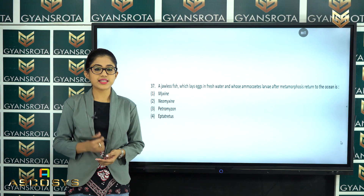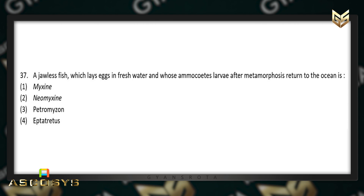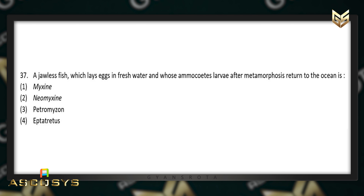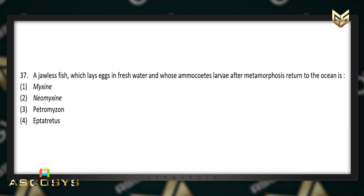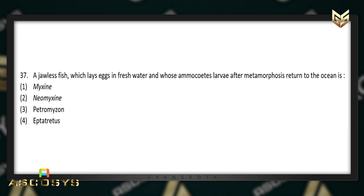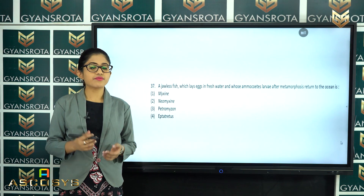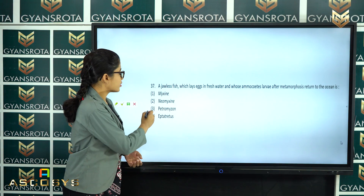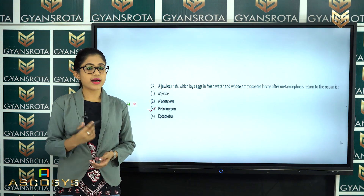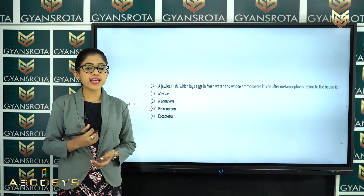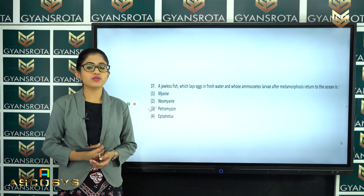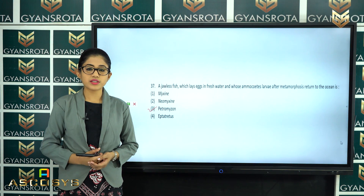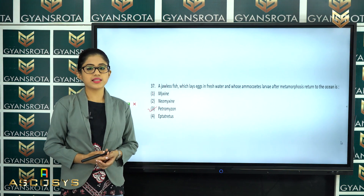The next question is question number 37. A jawless fish which lays eggs in fresh water and whose ammocoetes larvae after metamorphosis return to the ocean is: Myxine, Neomyxine, Petromyzon, or Apterius? From the chapter Animal Kingdom, option number 3 is the correct answer — Petromyzon is a jawless fish that lays eggs in fresh water, and whose ammocoetes larvae after metamorphosis return to the ocean.